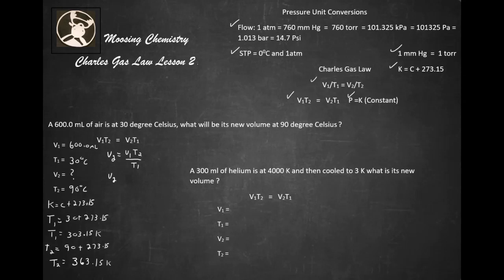So V2 equals 600.0 milliliters times our T2, which is 363.15 Kelvin, divided by our T1 value, which was 303.15 Kelvin. Our Kelvins cancel out.